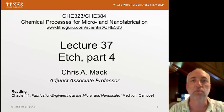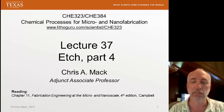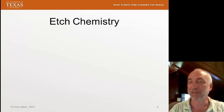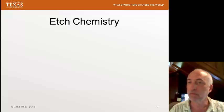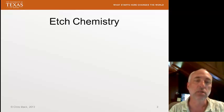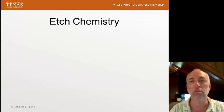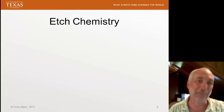This is Chemical Processes for Micro and Nano Fabrication. I'm Chris Mackin. We're at Lecture 37, the last part, part 4, of our series on etch. The reading is Chapter 11 of our textbook by Campbell. Let's talk a little bit about the chemistry of etch processes. We've mentioned this a few times in passing in the previous three lectures, but there are some interesting aspects about plasma etch chemistry that might not be obvious at first glance.